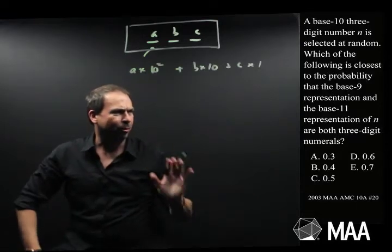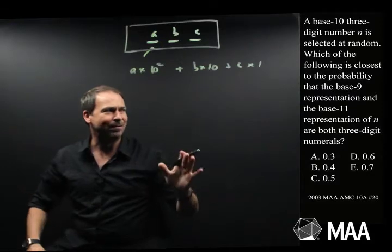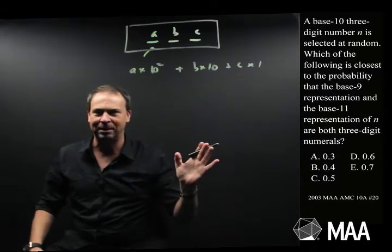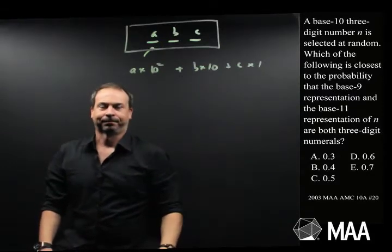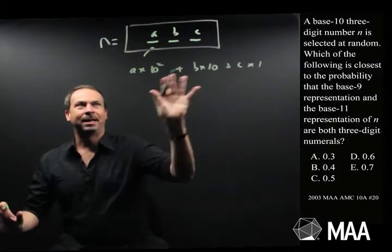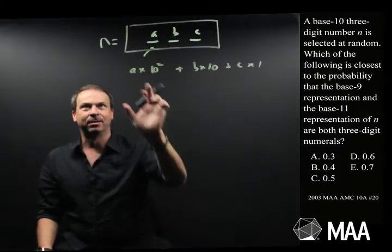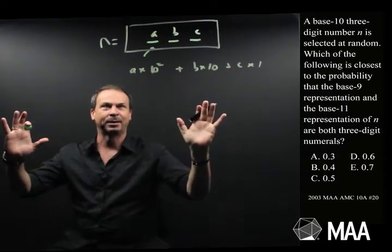Which of the following is closest to the probability that the base-9 representation and the base-11 representation of n are both three-digit numerals? Okay, obviously I'm pausing there because that makes me a little bit nervous. So this is n in base-10. We want the base-9 and the base-11 representations of n. So let's be very clear. What does that mean?